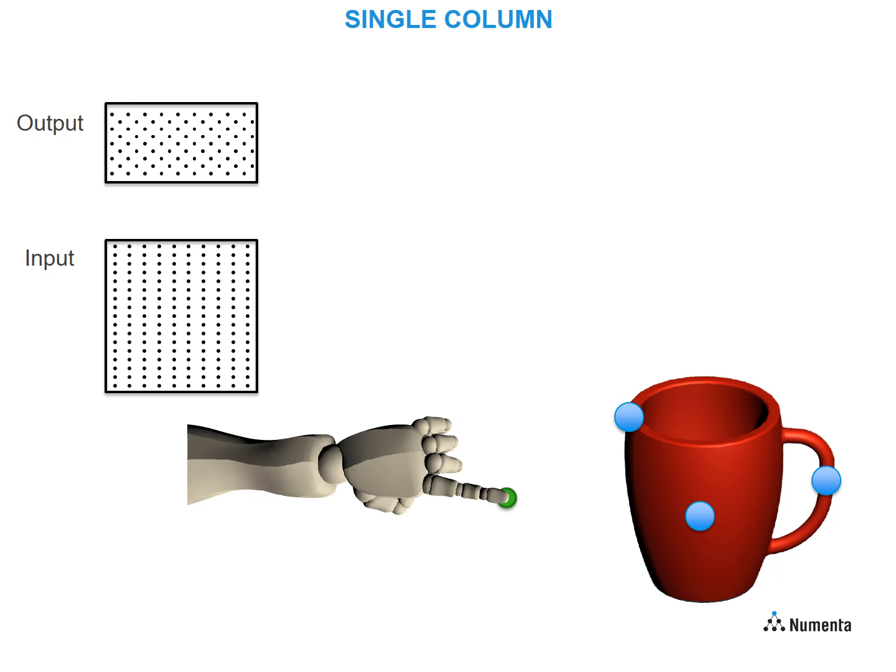On the left you see a one-column network, with an input layer on the bottom and an output layer on top. We assume the network has already been trained on a set of objects. The green circle on the finger represents the sensor. The blue circles on the cup highlight the three areas where it's going to touch.